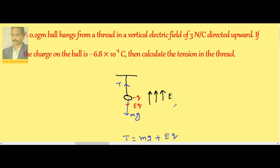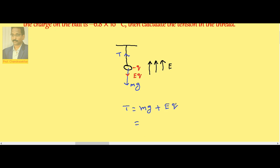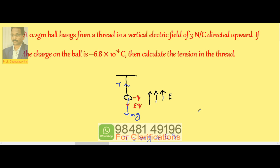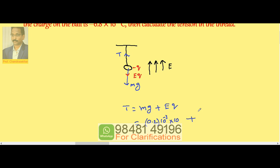m is given as 0.2 grams, 0.2 × 10⁻³. Let us take g as 10. E is 3 N per coulomb, q is 6.8 × 10⁻⁴.